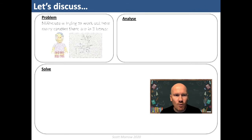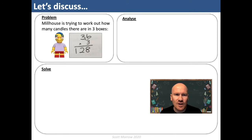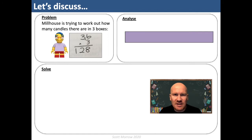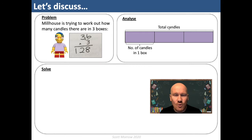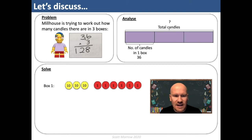Let's have a look at Milhouse's problem. Milhouse is trying to work out how many candles there are in three boxes. So let's analyse this ourselves. I'm going to start by drawing a bar — that bar represents the whole amount, and in this case the whole amount is the total number of candles. How many parts are we going to split that bar into? Well there are three boxes of candles, so let's split it into three parts. Each of those parts is the number of candles in one box, and we know there are 36 in one box, and we're trying to work out the whole amount. Now let's have a go at solving this using place value counters. Let's put out the number of candles in one box — there's the 36 — and the second box, and the third box.